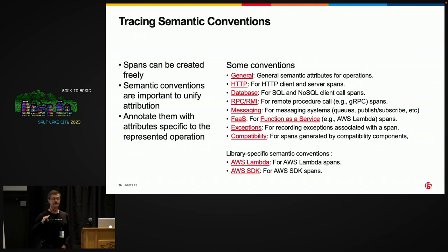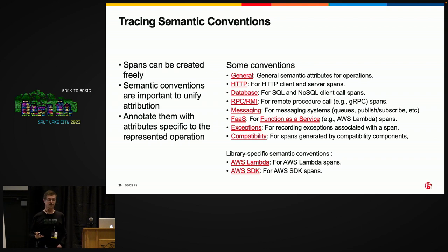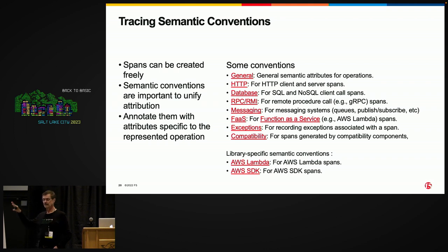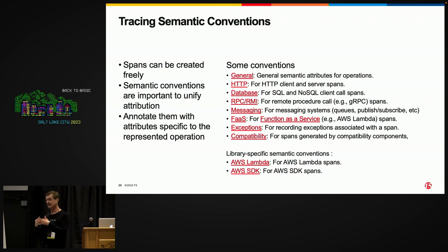We know that there are some common things that happen any time we're touching a computing system or application. So we have this list of semantic conventions that we all agreed on — if you have an HTTP call, it's going to be tagged HTTP with a dot subclass. Those are semantic conventions which are always there. You don't have to do anything. When it recognizes it, it will tag it with those conventions. There are a lot of them — this is not a complete list — and their job is really to make sure that all the attributions get unified.